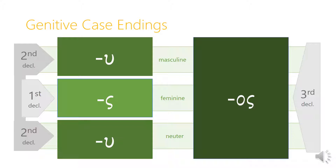The feminine first declension ending is just a sigma, and the third declension ending for the genitive is omicron sigma, os. You need to be careful, because this os ending looks just like the nominative case ending for masculine second declension nouns. So it's important to remember what declension a particular noun is: if it's third declension and ends in os, it's genitive; if it's second declension masculine and ends in os, it's nominative. The Greeks were just cruel and unusual.